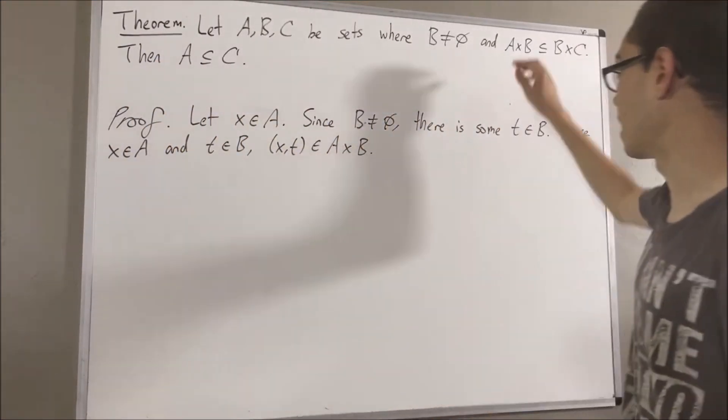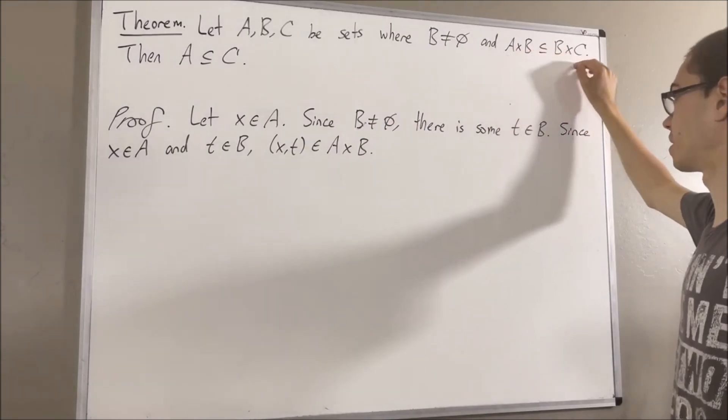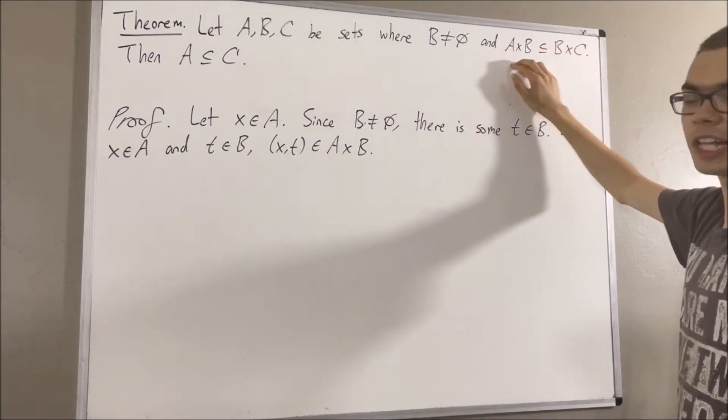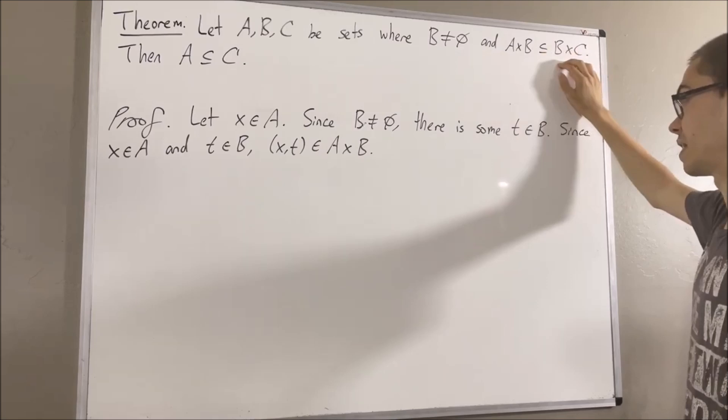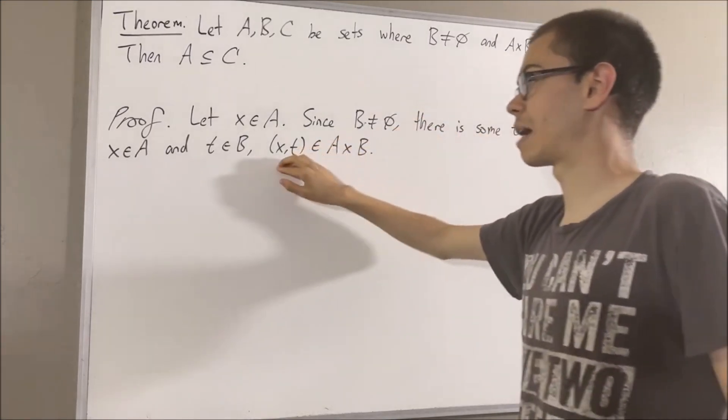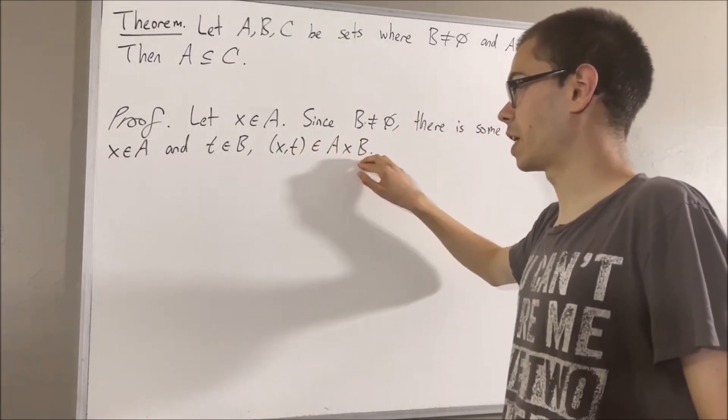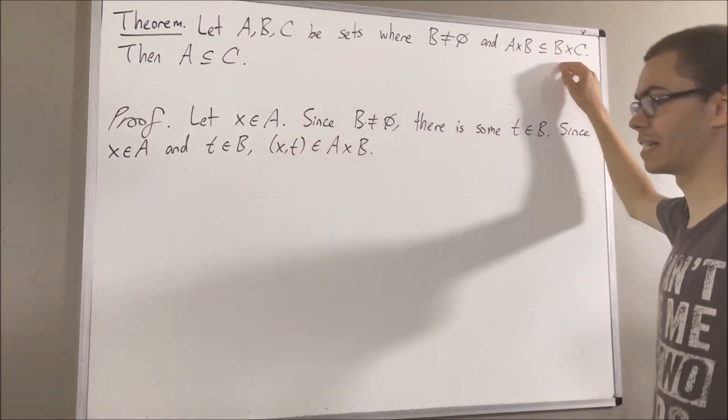And then, since A times B is a subset of B times C, this means that every element of A times B belongs to B times C. So since X comma T is an element of A times B, we have that X comma T is an element of B times C.